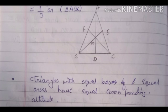Triangles with equal bases and equal areas have equal corresponding altitudes. With equal areas and equal bases, their altitudes are also equal. With this, we have completed the introduction of this chapter. In the next video, we will start our exercise with Exercise 9.1.